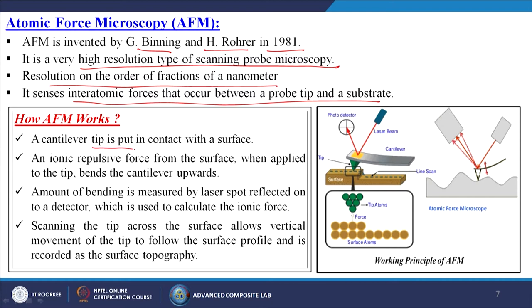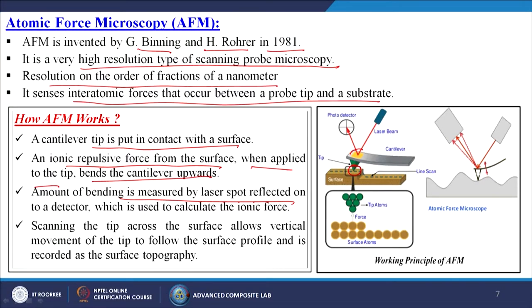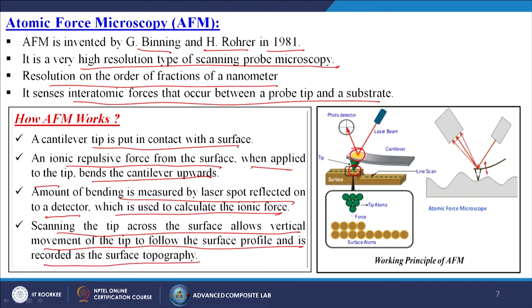How does AFM work? A cantilever tip is put in contact with the surface. An ionic repulsive force from the surface when applied to the tip bends the cantilever upwards. The amount of bending is measured by a laser spot reflected onto a detector, which is used to calculate the ionic force. Scanning the tip across the surface allows vertical movement of the tip to follow the surface profile, which is recorded as the surface topography.